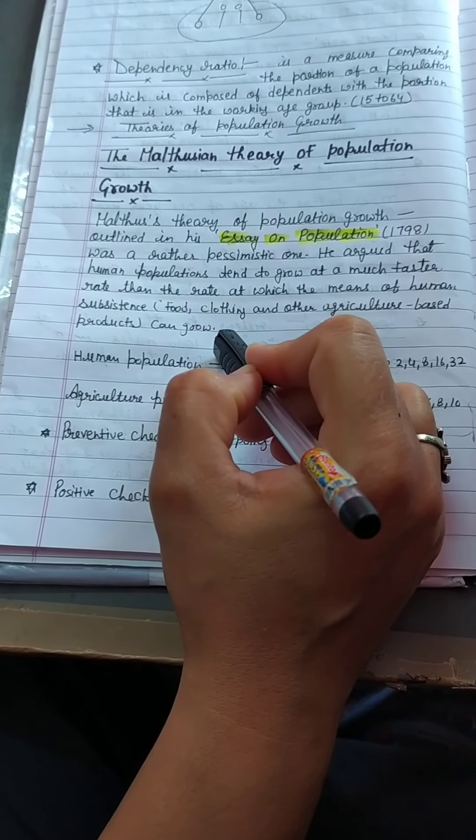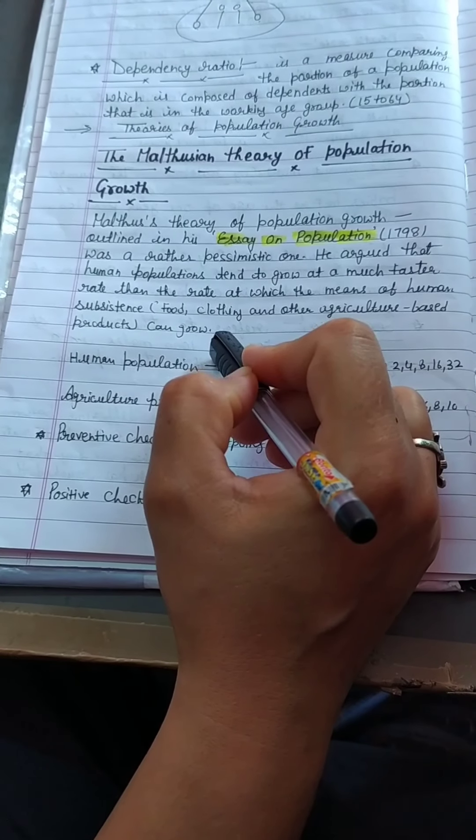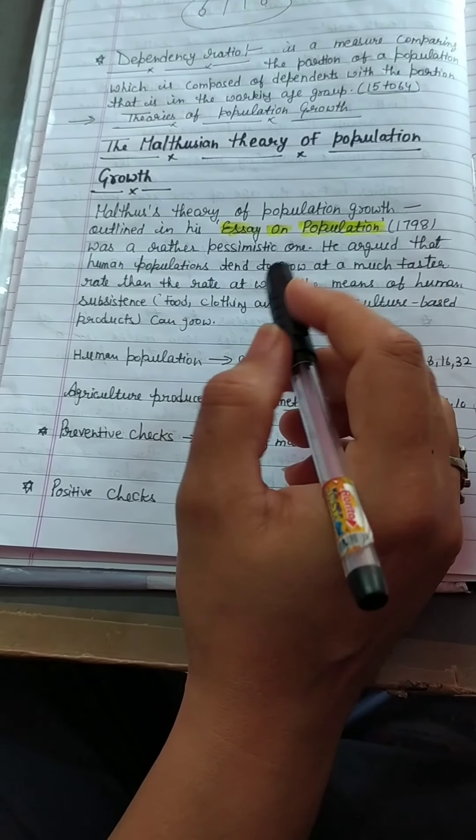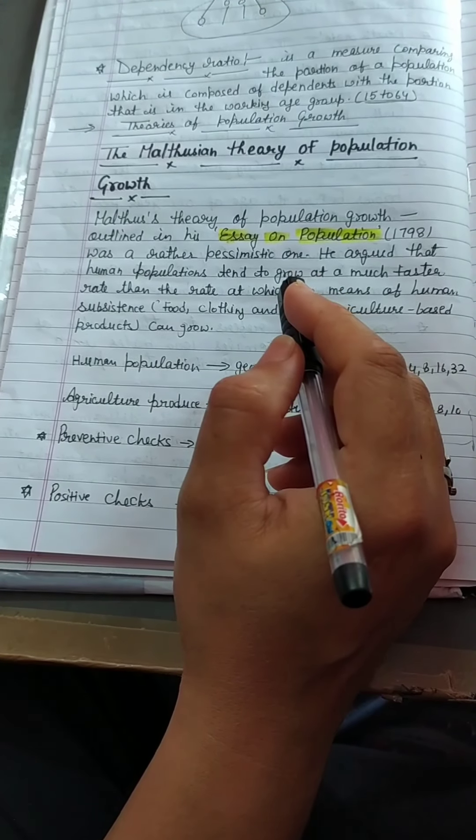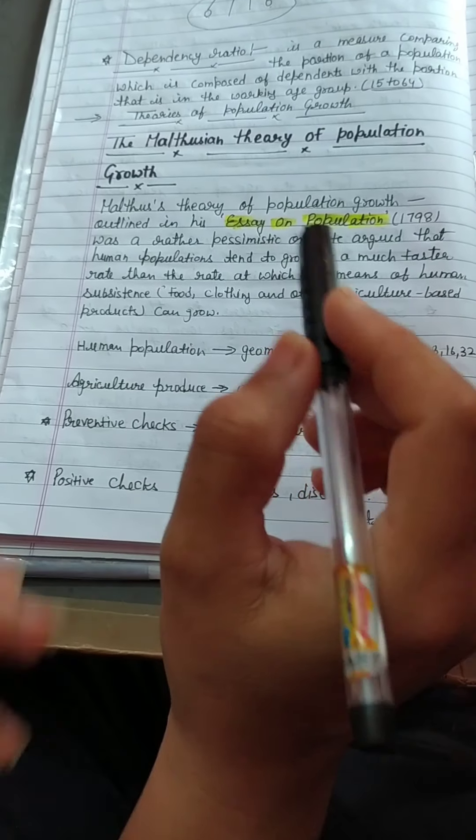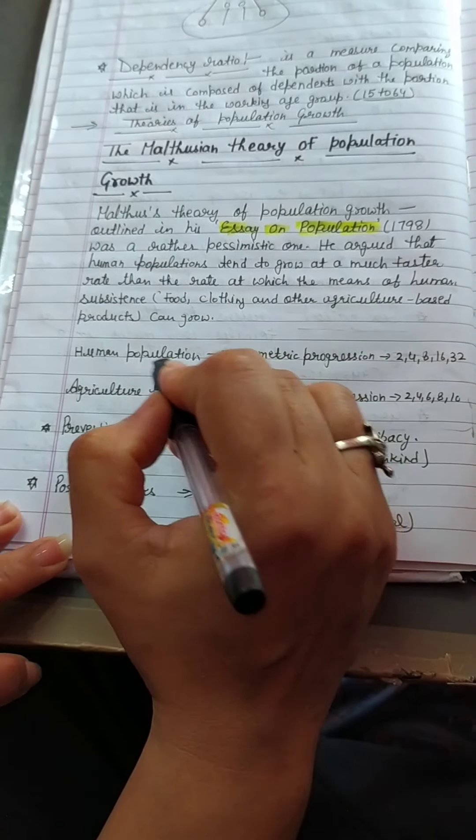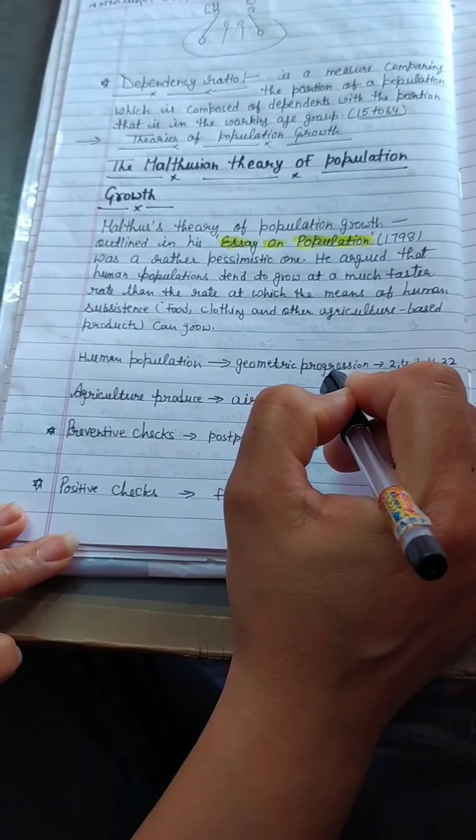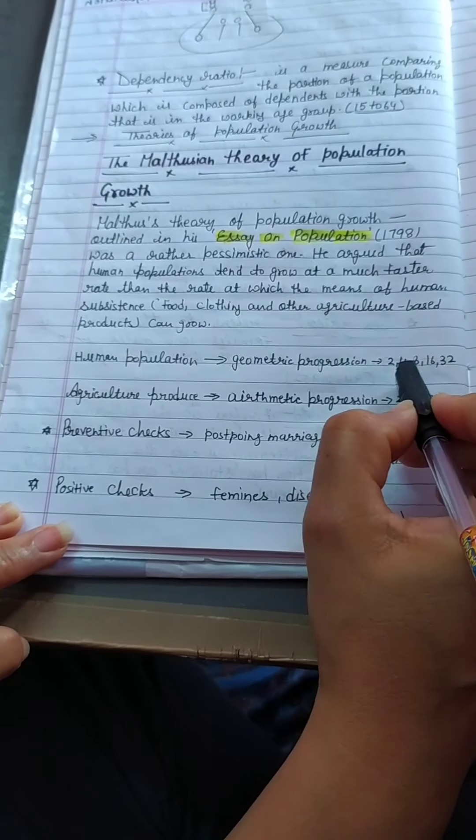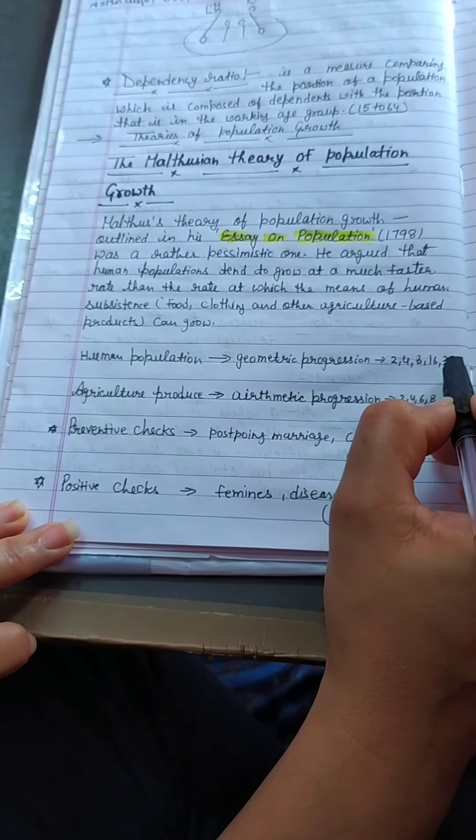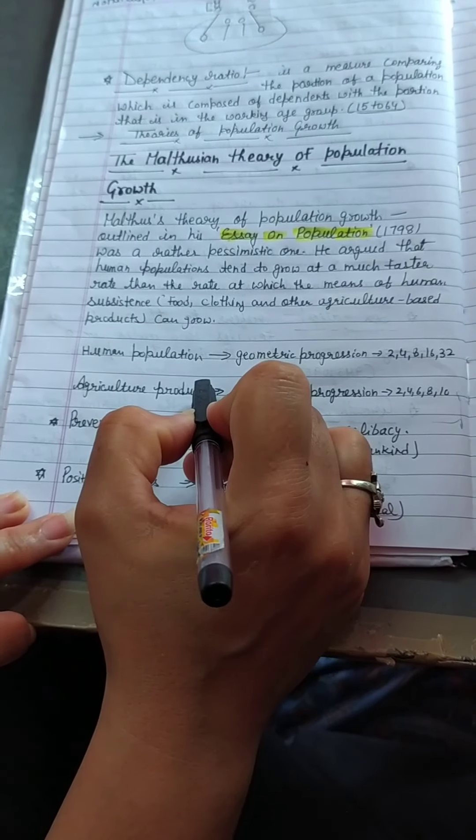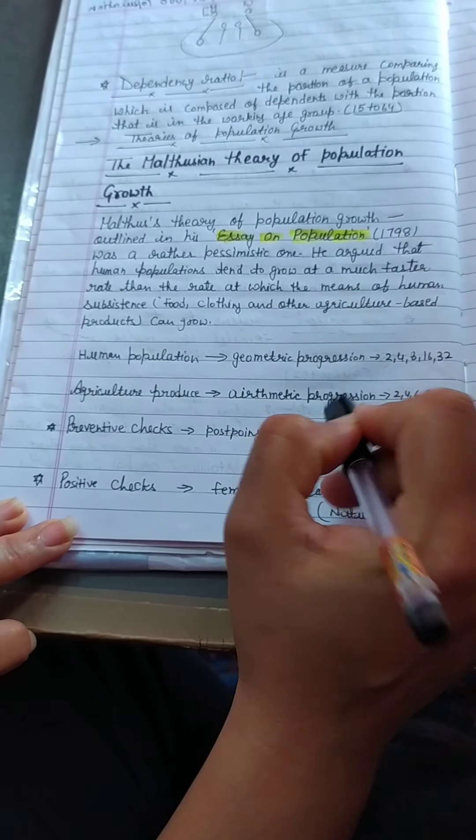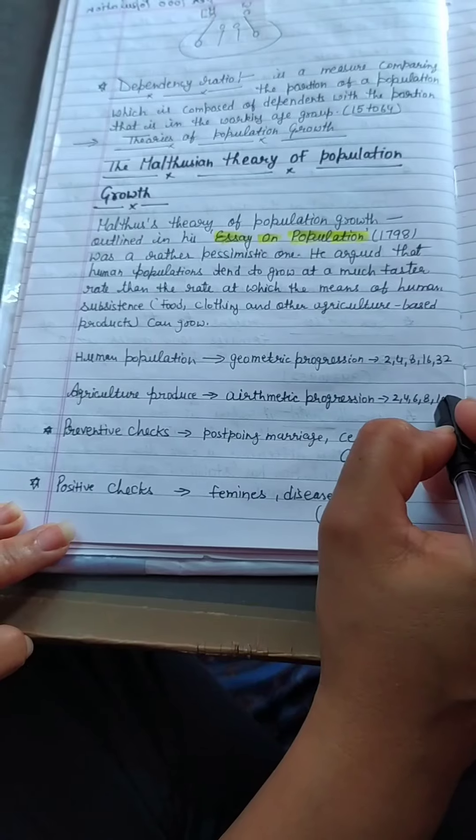He argued that human population tends to grow at a much faster rate than the rate at which the means of human sustenance like food, clothing and other agriculture-based products can grow. According to him, the rate of population growth is faster than the rate of agriculture growth. He said that human population rises according to geometric progression like 2, 4, 8, 16, 32, and agriculture produce grows according to arithmetic progression like 2, 4, 6, 8, 10.